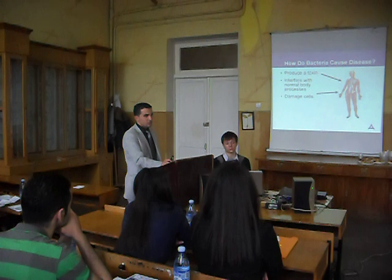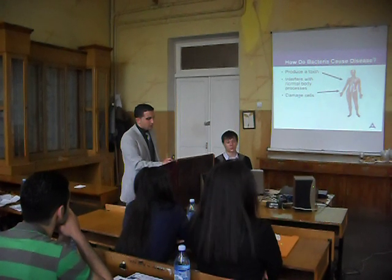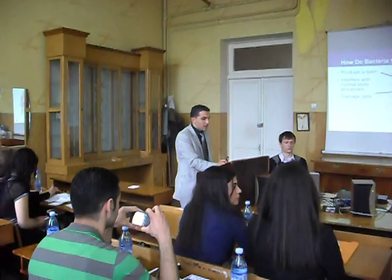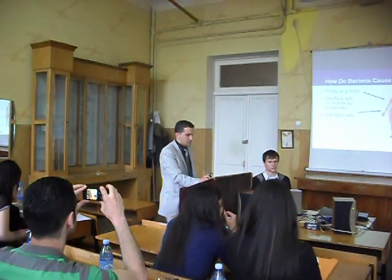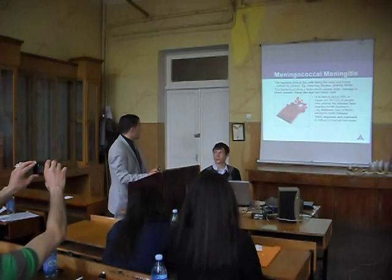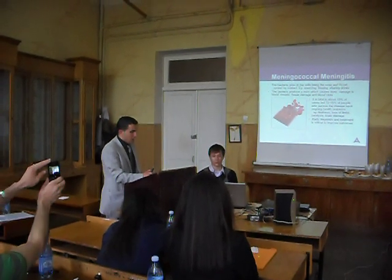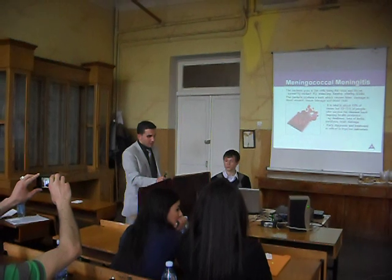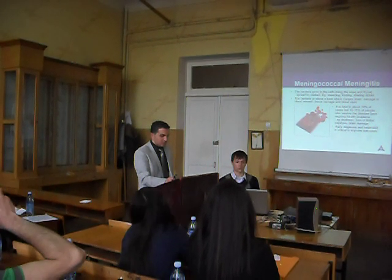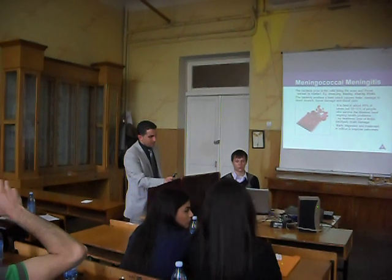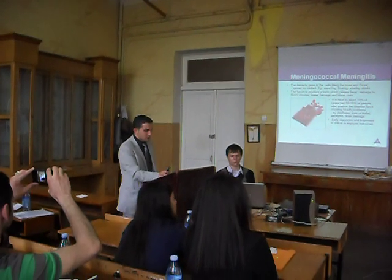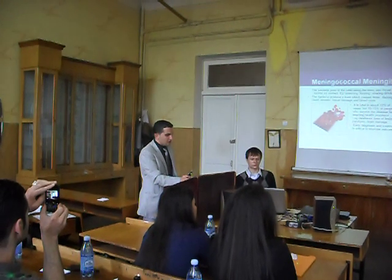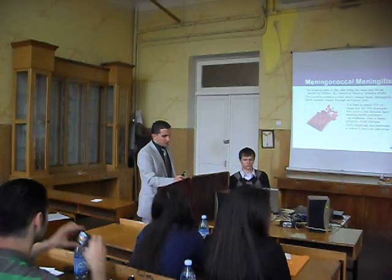Now, how do bacteria cause disease? We all know that bacteria produce a toxin which interferes with normal body processes, and as a result the cells of the body are damaged. Meningococcal bacteria grow on the cells lining the nose and throat and spread by contact — for example, sneezing, kissing, and sharing. The bacteria produce a toxin which causes fever, damage to blood vessels, tissue damage, and blood clots. It is fatal in about 10% of cases.